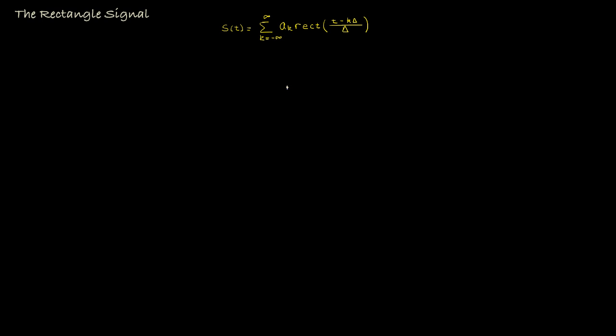Well, here's the superposition equation for creating a complicated signal from rectangles. Our signal s of t is the summation as k goes from minus infinity to infinity of an amplitude a sub k times a rectangle that has a width of delta and has been shifted to k times delta.